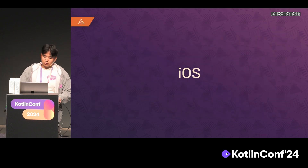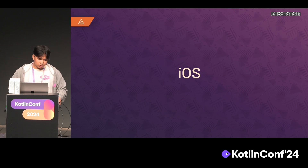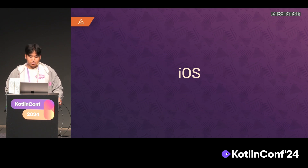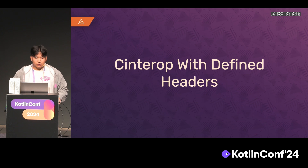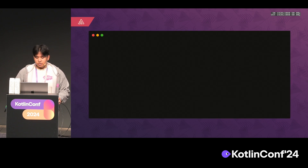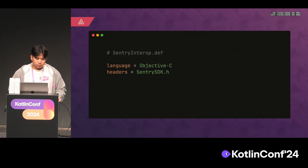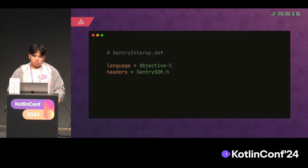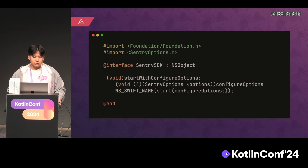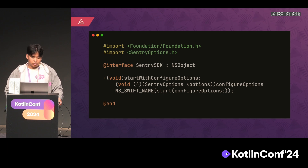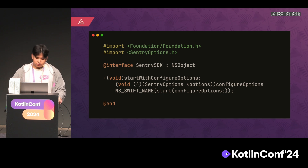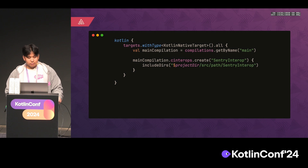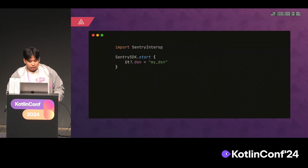For iOS or any Apple target, it's a bit more nuanced because you want to create Kotlin bindings to call the underlying framework you're embedding into your library. The first option is using the CInterop tool with defined headers — and I say 'defined' because you have to define your headers yourself. You create a .def file, specify the language, and define which headers you want to create bindings for. In this case I have the Sentry SDK header taken straight from our Cocoa repo, and I just stripped the parts we didn't need — I was focused on the configure options function. In the build file you add the additional step to create a CInterop, and then you can call it directly in your iOS or Apple target source set.